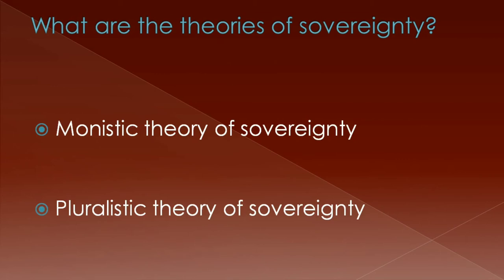There are two main theories of sovereignty: the first one is the monistic theory of sovereignty and the second one is the pluralistic theory of sovereignty.